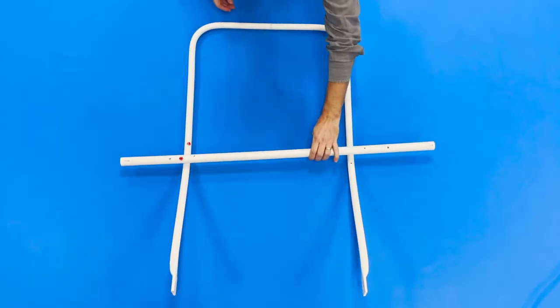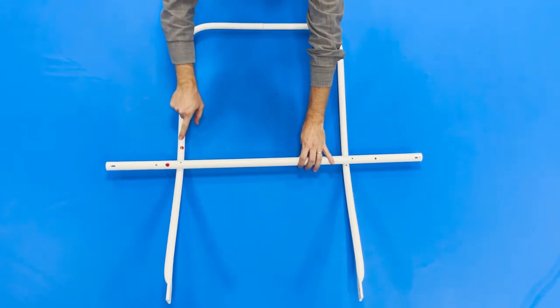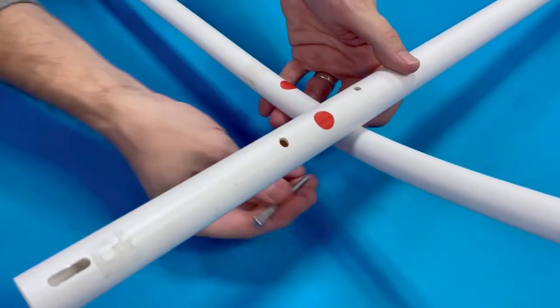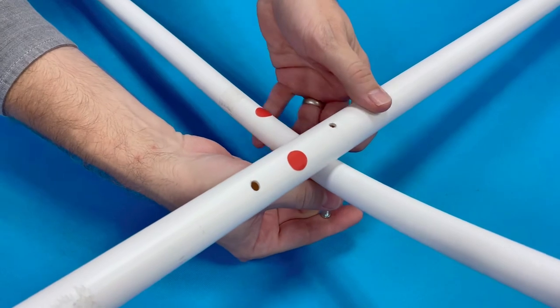Place the straight crossbar and make sure the red dots are aligned on the same side. Make sure the bolts are inserted from the back of the seat frame through the crossbar.